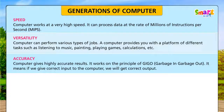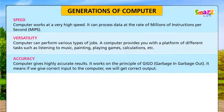Accuracy: Computer gives highly accurate results. It works on a principle of GIGO, i.e., garbage in garbage out. It means if we give correct input to the computer, we will get correct output.